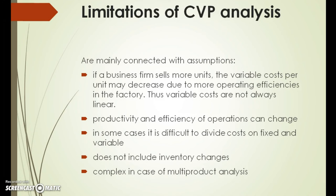CVP analysis assumes no change in inventory quantities; when changes take place in the inventory level, CVP analysis becomes more complex and not very useful. If any data such as price, costs, or sales changes, the overall CVP analysis must also be adjusted — this is one of the actual limitations. Additionally, this method can be very complex in the case of multi-product analysis, where different products yield different contribution margins and are produced in various volumes with different costs, greatly limiting the advantages of CVP analysis.